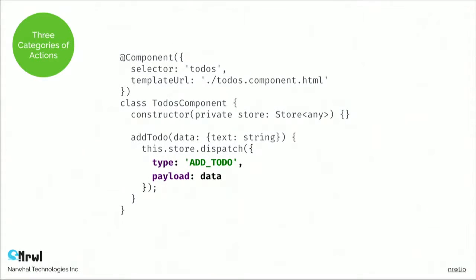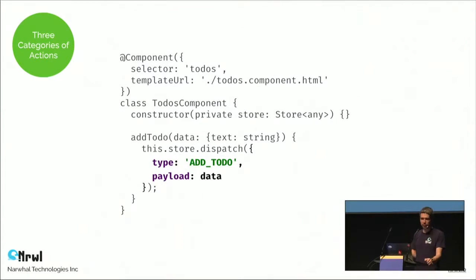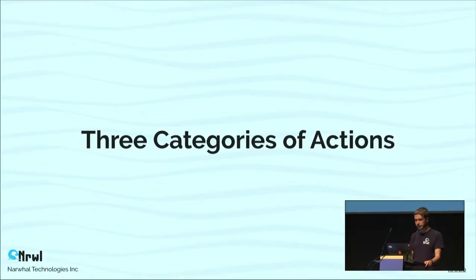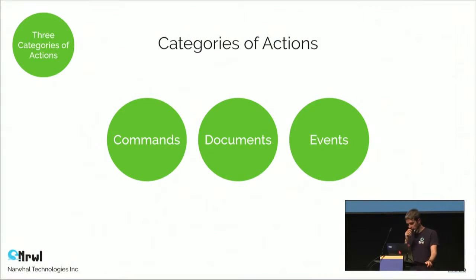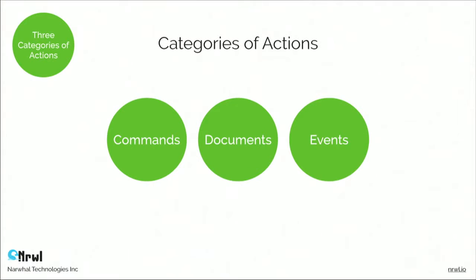NGRX doesn't impose constraints on our actions beyond the two basic fields. But if you start using NGRX, after maybe a few days you'll find that not all actions are alike — there are certain categories they fall into. There are actually three categories. Actions can be roughly divided into commands, documents, and events. Interestingly, the same categorization works really well for most messaging systems, suggesting there is something fundamental about dividing messages into these three groups.